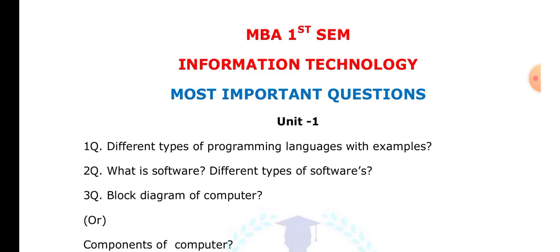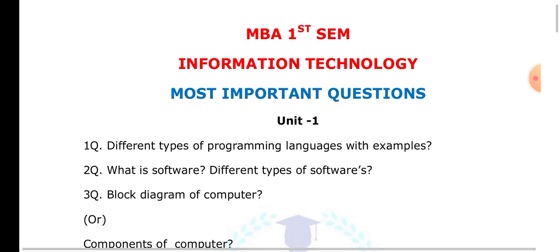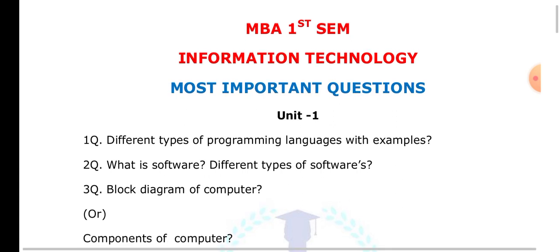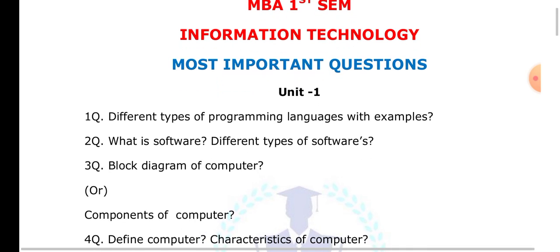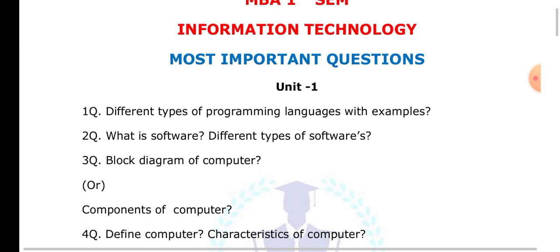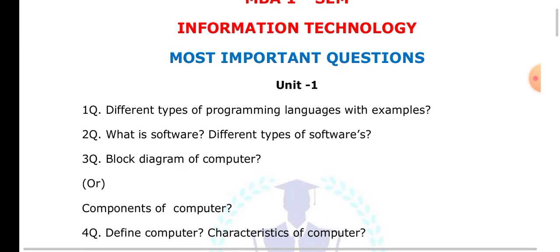You have to draw the block diagram showing input/output devices and the central processing unit. The CPU consists of three parts: ALU, MU, and CU. All these concepts and definitions you have to explain along with the diagram. This is also called components of computer or elements of computer — all are the same.